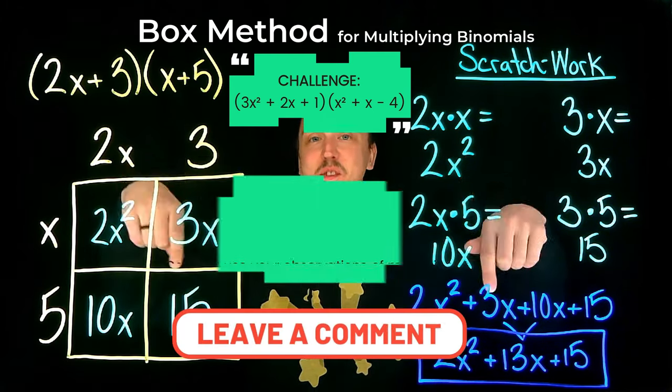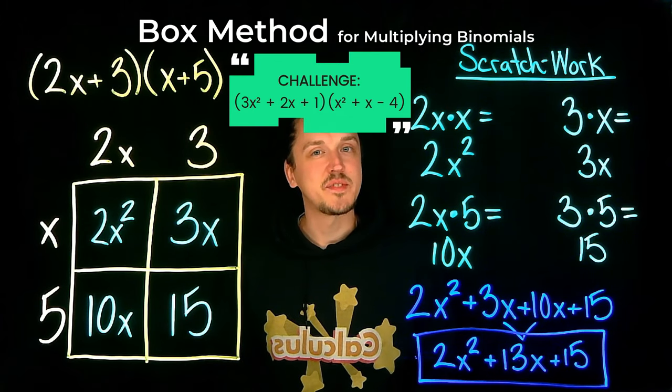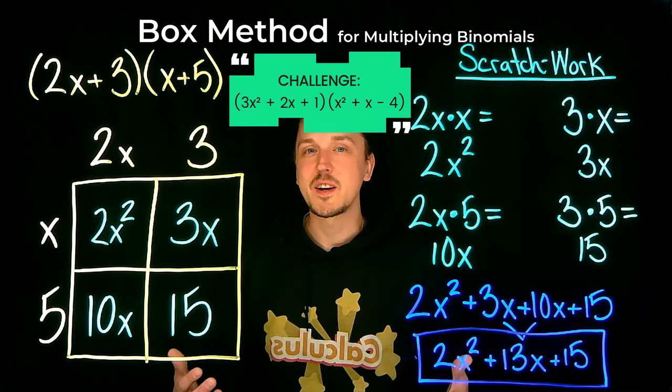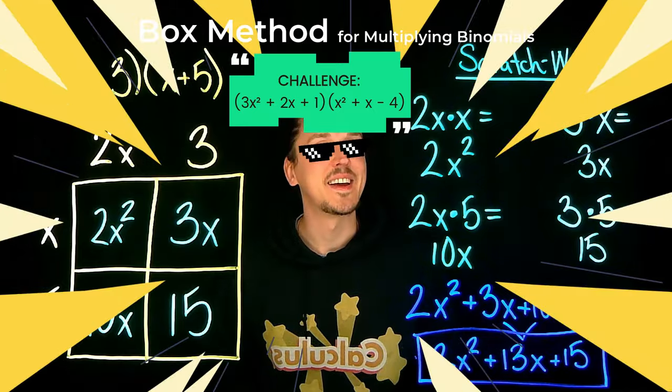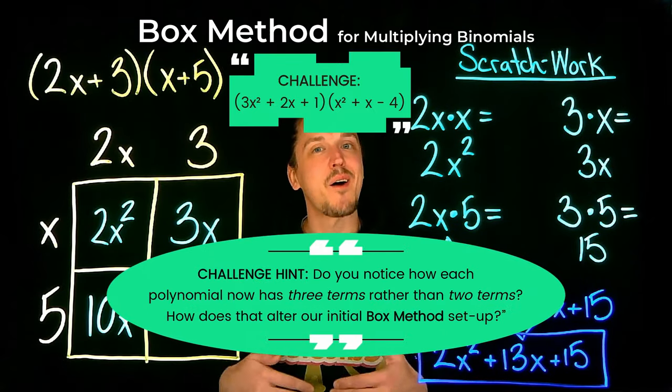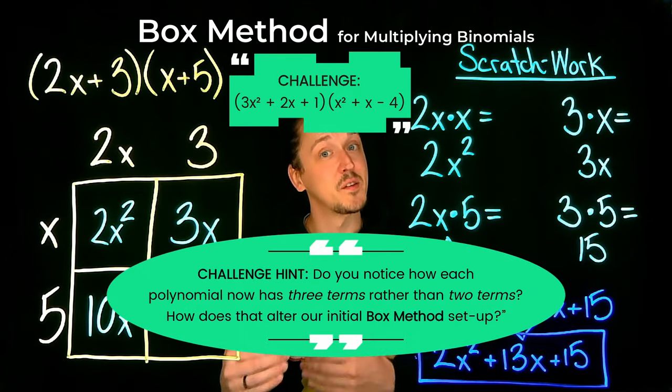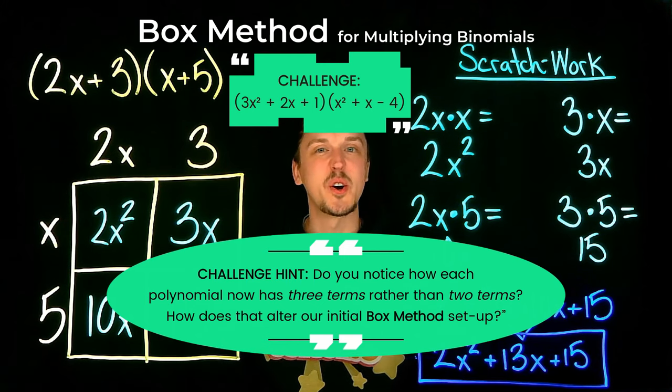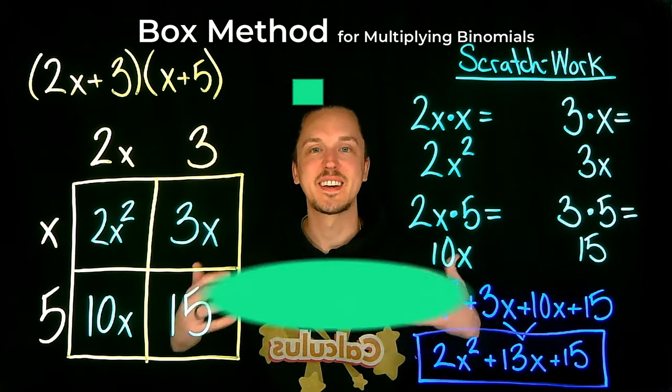Share your answers and reasoning in the comments below. Remember, it's not just about figuring it out the first time, but about giving it a shot and trying your best. Here's a hint: notice how each polynomial now has three terms instead of two? How does that alter our initial box method setup, do you think?